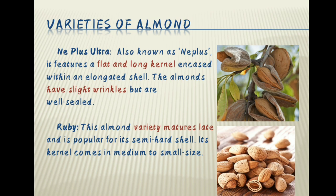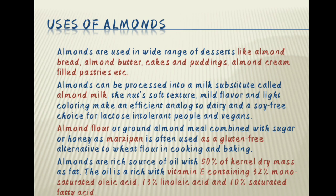RUBY — this almond variety matures late and is popular for its semi-hard shell; its kernel comes in medium to small size. Uses of almonds: almonds are used in a wide range of desserts like almond bread, almond butter, cakes and puddings, almond cream, filled pastries, etc. Almonds can be processed into a milk substitute called almond milk. The nut's soft texture, mild flavor and light coloring make it an efficient analog to dairy and a soy-free choice for lactose intolerant people and vegans. Almond flour or ground almond meal combined with sugar or honey as marzipan is often used as a gluten-free alternative to wheat flour. Almonds are a source of oil with 50% of kernel dry mass as fat, rich in vitamin E, containing 32% monounsaturated oleic acid, 13% linoleic acid and 10% saturated fatty acid.